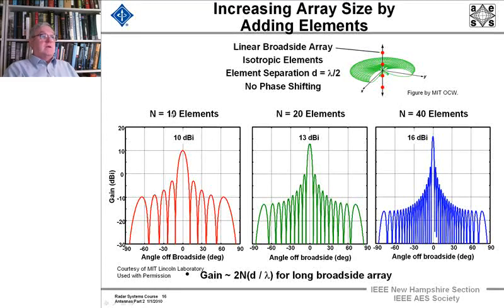And with ten elements, we get this gain with this many nulls and side lobes. And with double the number of elements, you see we get about double the number of side lobes. And you can see it gets thinner. And we go to 40, and it gets even thinner.